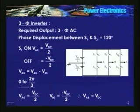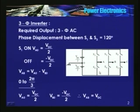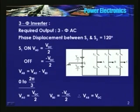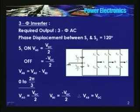When these switches are on, the voltage potential of A, B, and C with respect to O is known. Therefore, these voltages Va0, Vb0, Vc0 are known as pole voltages. The waveform of pole voltages is a square wave of 180-degree duration.